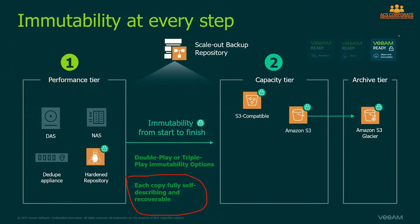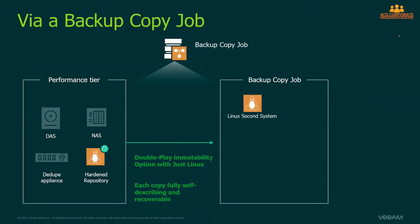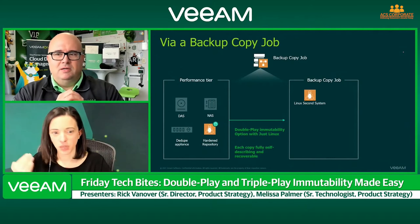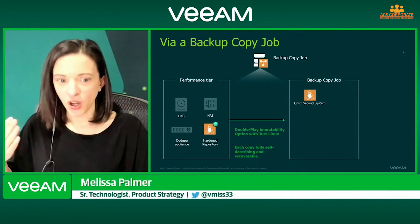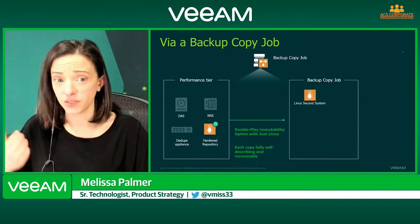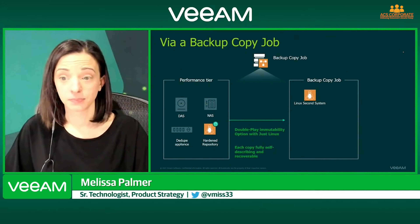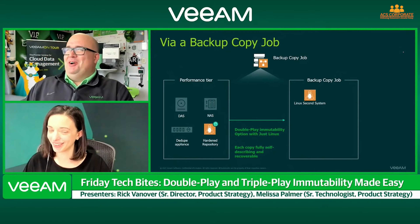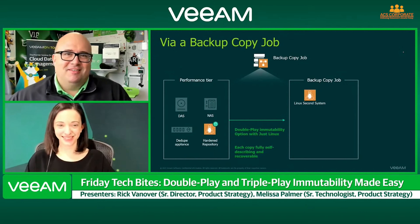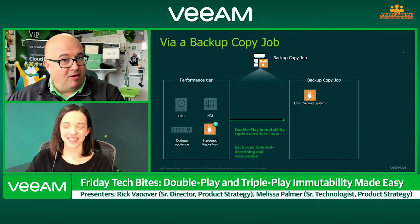That's the mindset of double play. And if you still want more, put a copy on tape or with a service provider. The cloud is a great way to get flexibility — no matter what your budget is or what kind of infrastructure you're working with, you can develop a solution with multiple immutable copies. And some people aren't ready for the cloud — there's nothing wrong with that. It's actually very easy to get this double play copy of immutable data on premises as well.